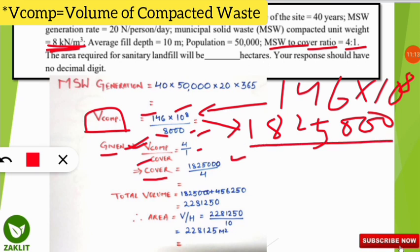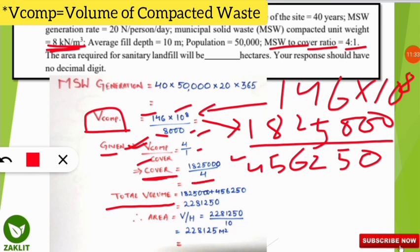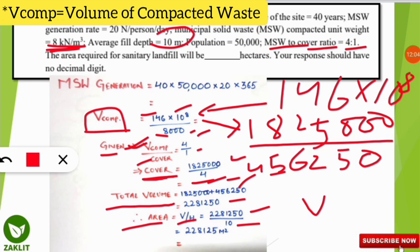Total volume = volume of compacted waste + volume of cover = 1,825,000 + 456,250 = 2,281,250 m³. Area = total volume ÷ height = 2,281,250 ÷ 10 = 228,125 m².